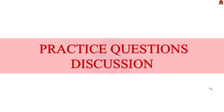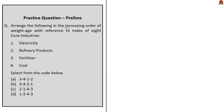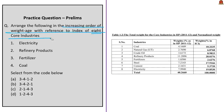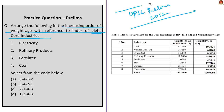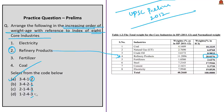Now we move to the practice questions discussion session. The first question asks to arrange the following in increasing order of weightage in the index of eight core industries: electricity, refinery products, fertilizer, and coal. If you know that refinery products has the highest weightage, you can easily arrive at option A, since only option A has refinery products listed last. The least weightage goes to fertilizer at about 2.62%, and the second highest weightage goes to electricity. So the correct answer is option A.